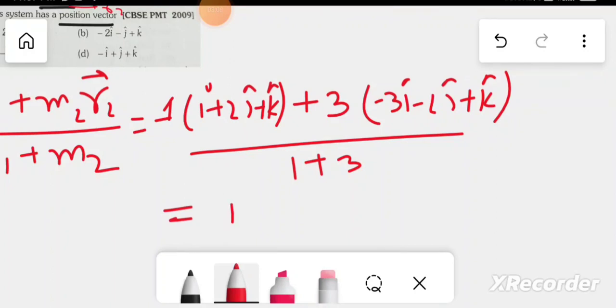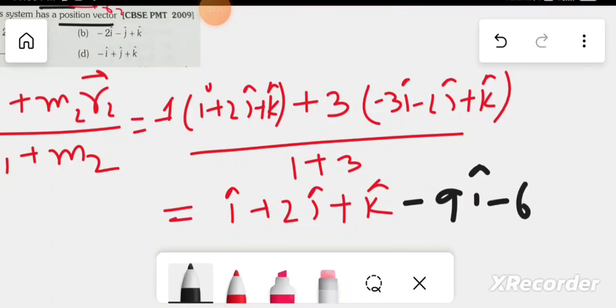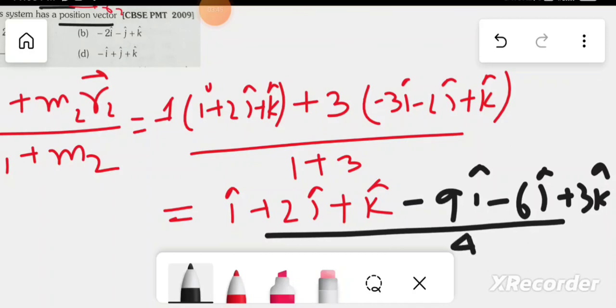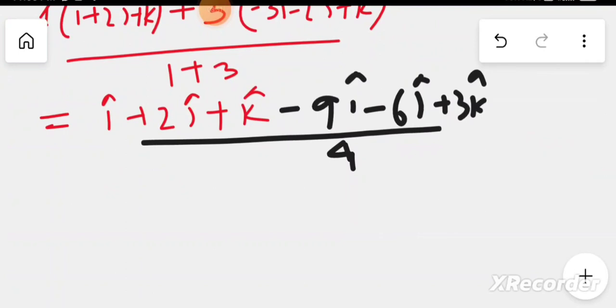i plus 2j plus k plus minus 3i minus 2j plus k. This gives us i minus 6j plus 3k, no wait, let me recalculate. i plus 2j plus k plus minus 3i minus 6j plus 3k by 4.